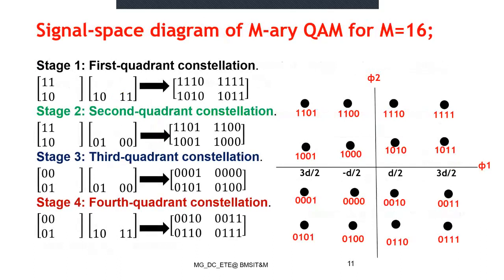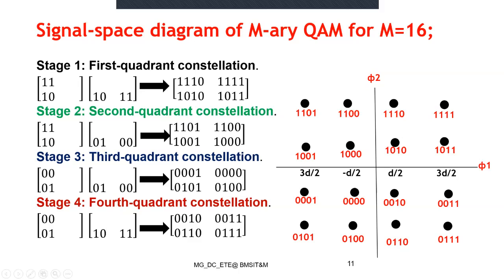The constellation can be written in different ways. For 16-QAM, there are three different amplitude levels: one level, another level at maximum, and a third level. There are also three different phases. Just to illustrate, I've animated this.